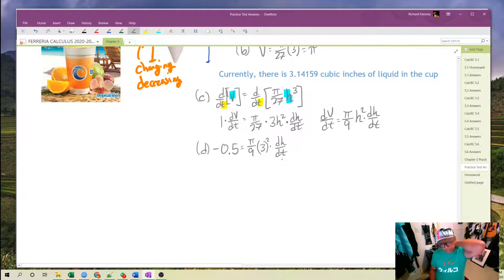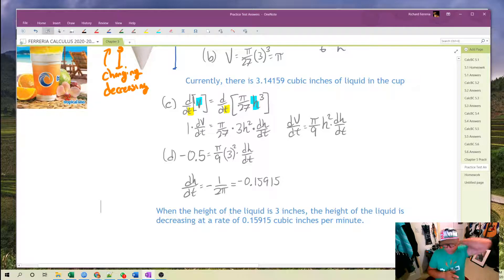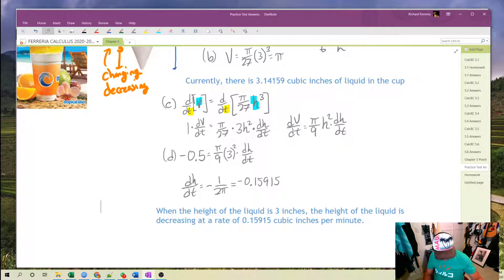This is not too difficult of a solve, so take a second and solve that. When you do solve it, you will get dh/dt is equal to negative 0.15915. Let's write out a summary statement and be done with this. So when the height of the liquid is 3 inches, the height of the liquid is decreasing at a rate of 0.15915 cubic inches per minute.